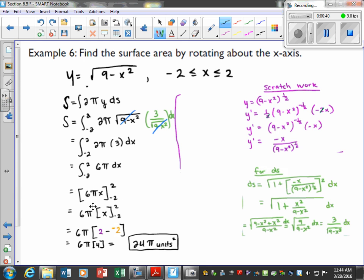And now I'm going to pull the 6π out, and then we evaluate x from -2 to 2, and the surface area is just going to be 24π units squared.